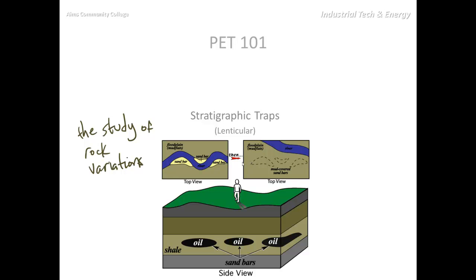So these sandbars — this loose material — get covered up and over time might get washed away or removed. And so we end up with these voids where these sandbars used to be, where oil deposits can form. As the fossil fuels migrate upward, they fill into these gaps.